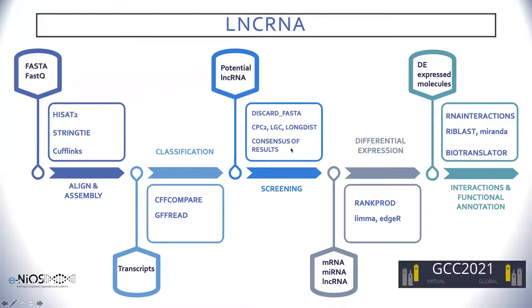We keep only the consensus of the results. When this is over, we will have a subset of mRNAs and a subset of long non-coding RNAs, and what we want to do next is perform a differential expression analysis on them with RAC products, which is a non-parametric robust statistical test. When this is over, we will have differentially expressed molecules that we would like to further examine whether they interact with each other, and we can do that with RNA interactions, which searches databases like NPinter and RISE, or test at sequence level with Miranda or RIBlast.